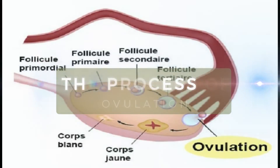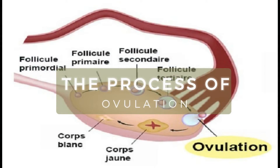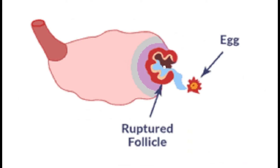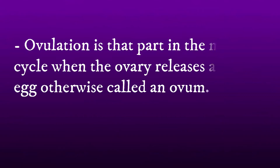In this video, the process of ovulation is fully explained. Ovulation is that part in the menstrual cycle when the ovary releases a mature egg, otherwise called an ovum.